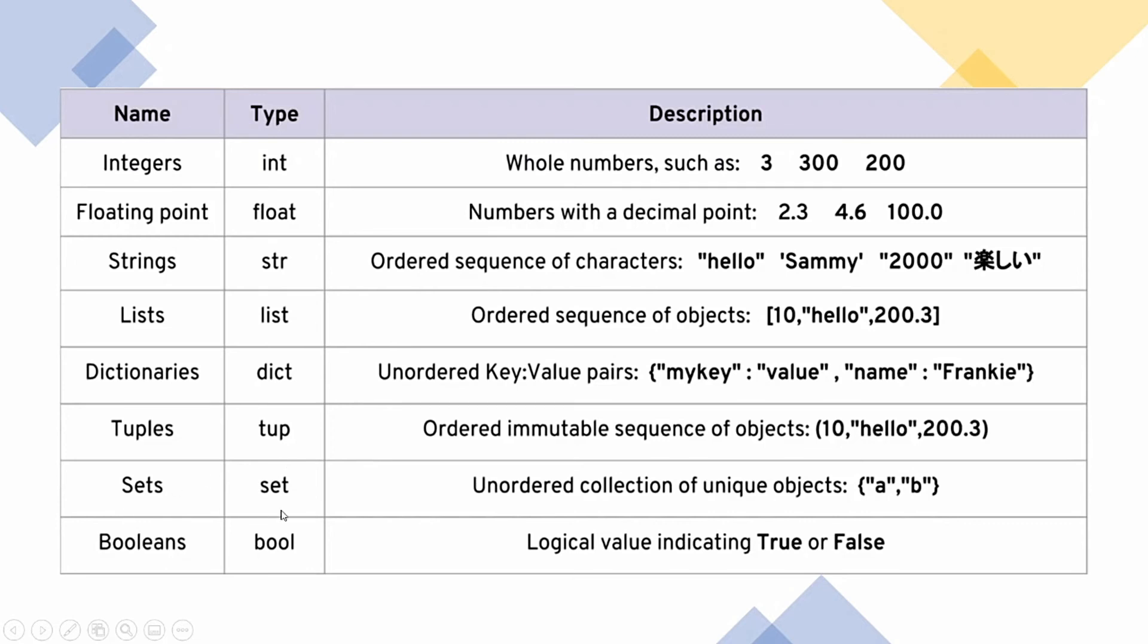Then there comes the set. Their data type is set. These are unordered collection of unique objects: a, b. We have studied in math how to write sets, right? We put it inside curly braces. Then they are under double inverted commas: a, b. The same way. There is nothing different about it. But they are of the same type, unordered collection of unique objects. It says unique objects means they are of the same type.